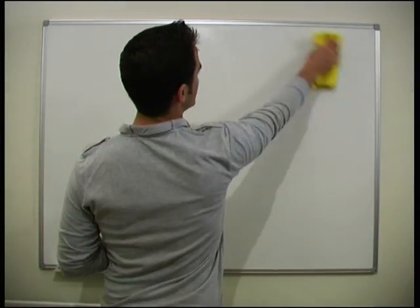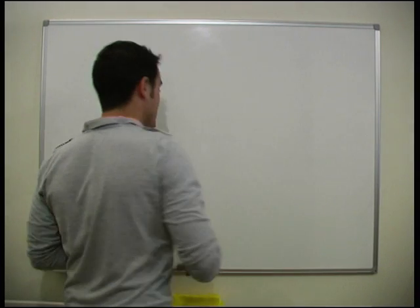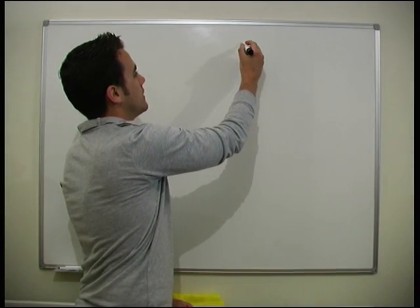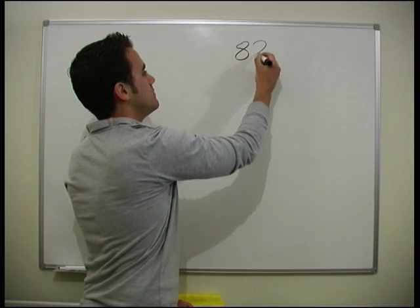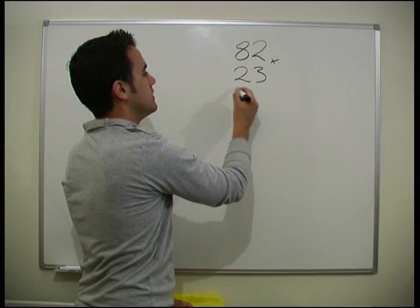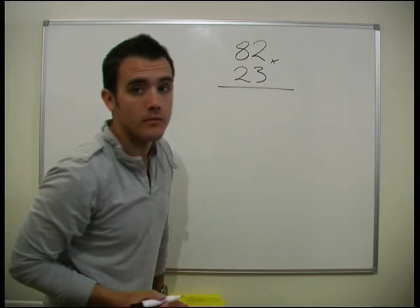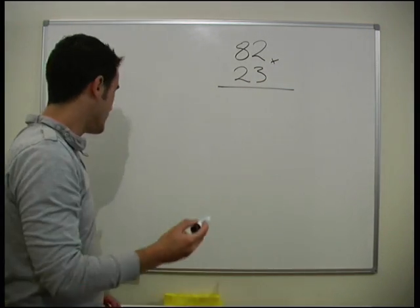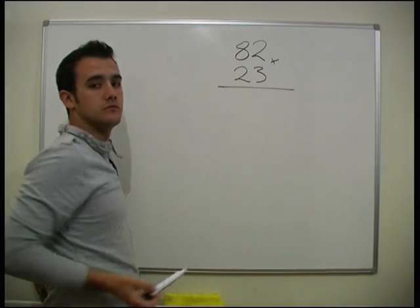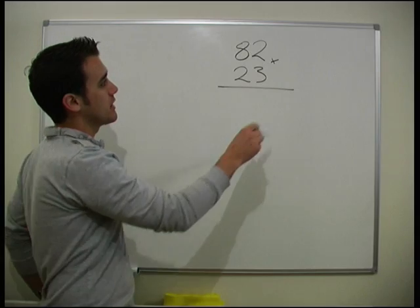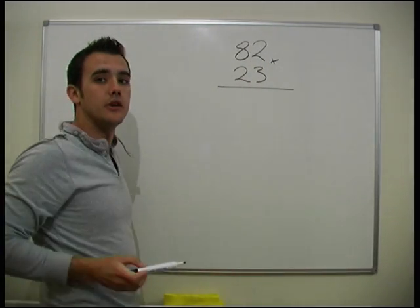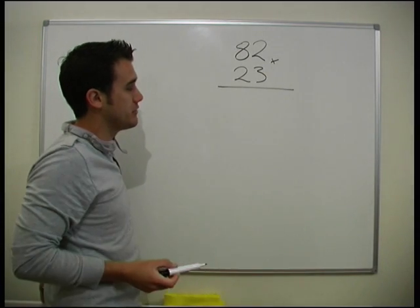Okay, what about when we've got two fairly big numbers to times together? What about if we had 82 times by 23? Okay, slightly more difficult. What we need to do now is do the 3 times everything, and then the 2 times everything. You can do it the other way around if you want. But I find it easier to take the numbers from the bottom and times them by the top.